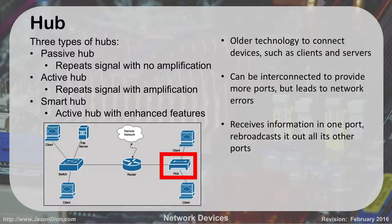With a hub, there are three different types. Passive hubs simply repeat the signal they receive. Active hubs take that signal, boost it, and then send it out again. This is important because standard Ethernet cables have a 100-meter limit — after 100 meters, the signal won't travel. If you use an active hub, it resets that 100-meter count, allowing you to extend networks further.